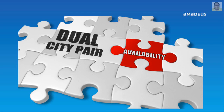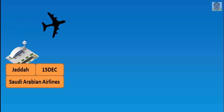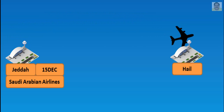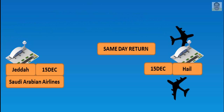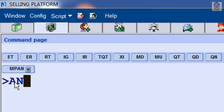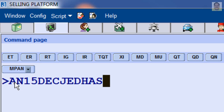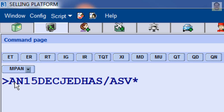For dual availability display — for example, departure from Jeddah to Hail on December 15th by Saudi Arabian Airlines and return on the same day — enter: AN, date December 15th, Jeddah to Hail, slash A and airline code SV, and asterisk symbol only.